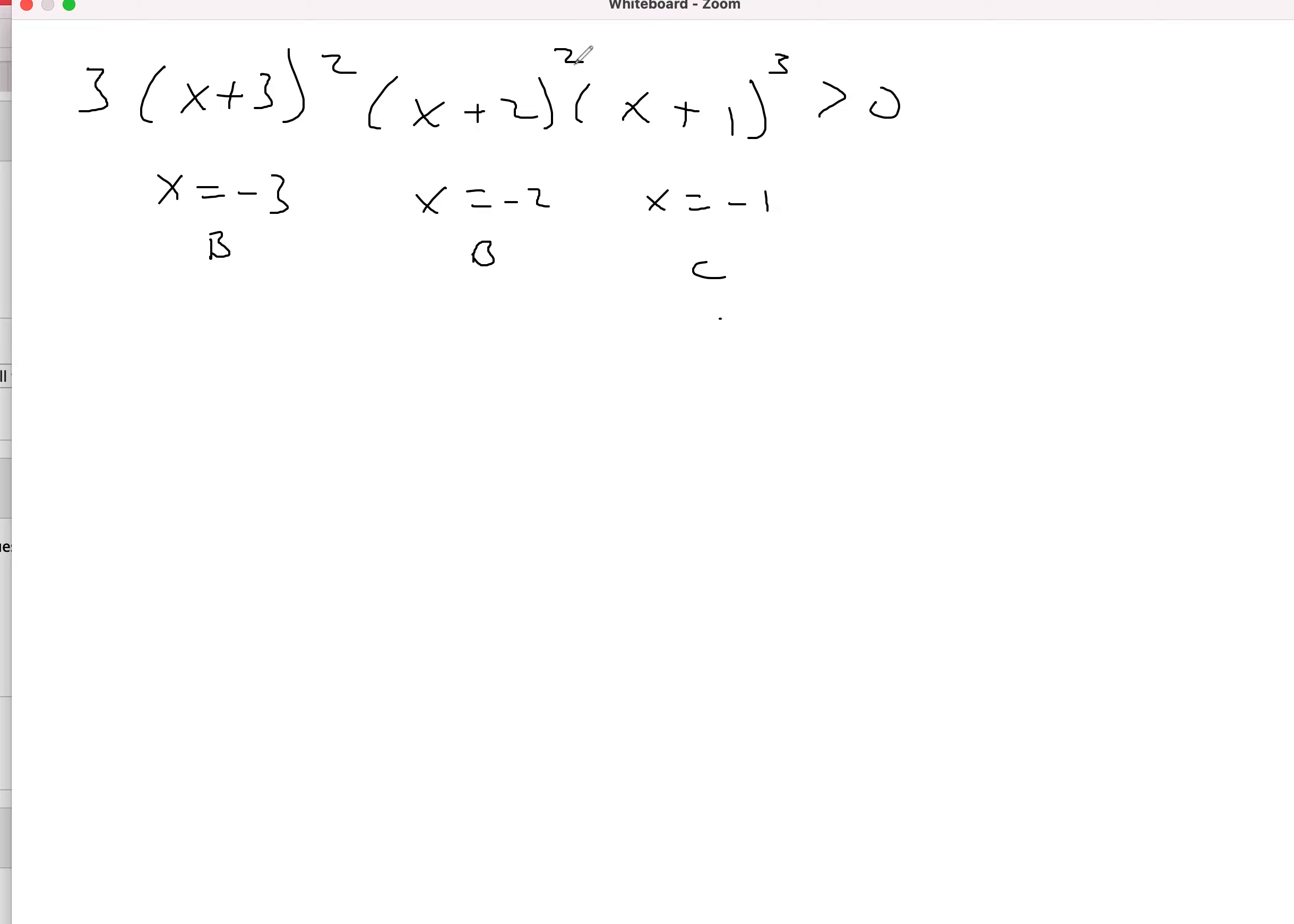And all together, we have 2, 4, and then plus 3 would be x to the 7th. It is positive, so that is a positive odd. So it would look kind of like x cubed, where it's going to come from the bottom and leave out the top.